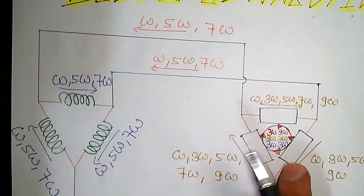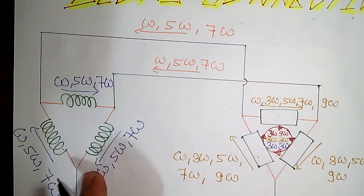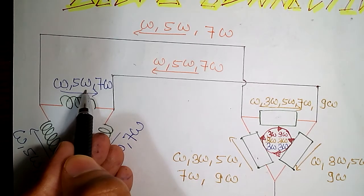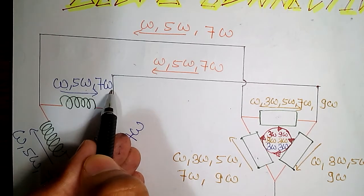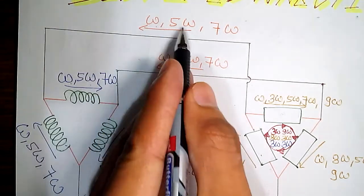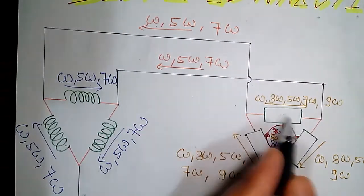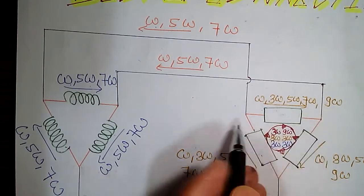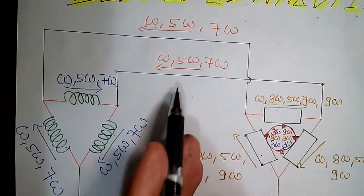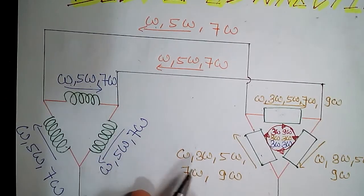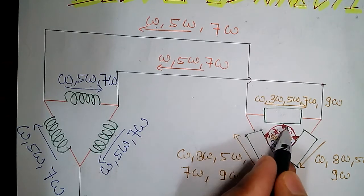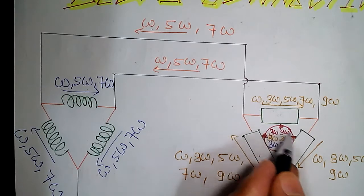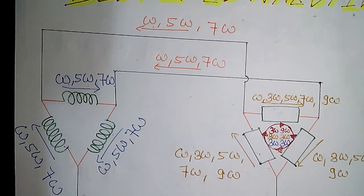First I have a drawing for you. This is my source and this is my load. What I am seeing in this drawing is that in my source I have Omega (fundamental harmonic), 5-Omega (fifth harmonic), and 7-Omega (seventh harmonic). Even in my line I have Omega, 5-Omega, and 7-Omega. But in my load I have Omega, 3-Omega, 5-Omega, 7-Omega, and 9-Omega — that is, in my load I also have triplen harmonics. But in my line and source I do not have those triplen harmonics. My triplen harmonics — third and ninth harmonics — are rotating in this circle only.